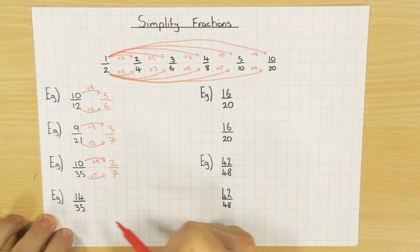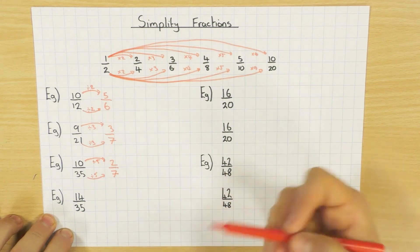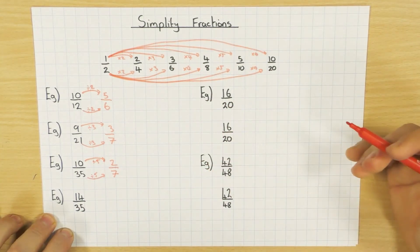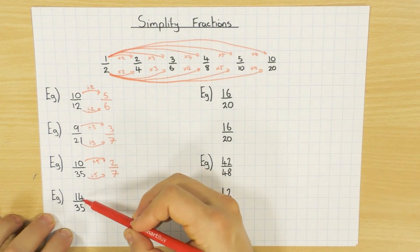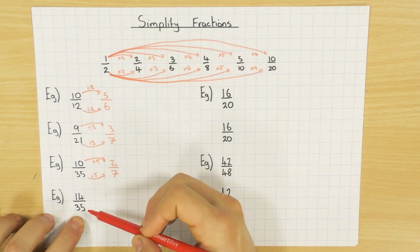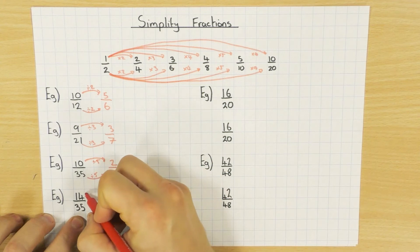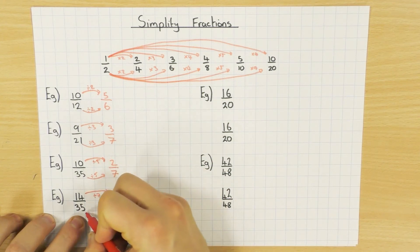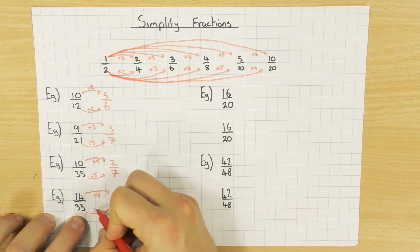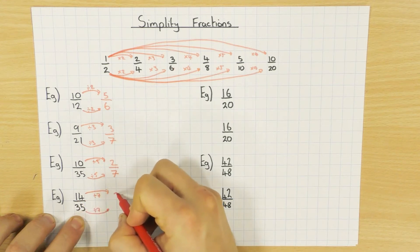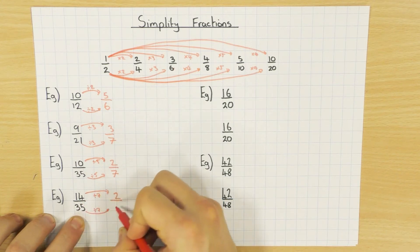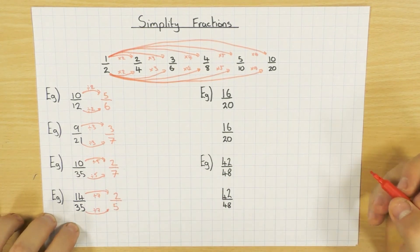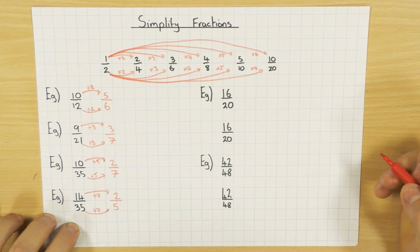Next one: 14 over 35. Again, check 2, 3, 4, 5 and so on. But if you're really good at your times tables, you might notice which number has both 14 and 35 in its times table — it's 7. So if you divide both top and bottom by 7: 14 divided by 7 is 2, and 35 divided by 7 is 5. So again, times tables here massively speed this process up.